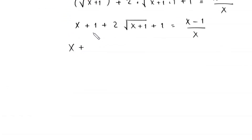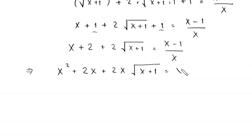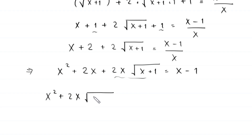Next, x plus 2 plus 2 times root (x+1) is equal to (x minus 1) over x. If we multiply both sides of this equation by x, this implies that x squared plus 2x plus 2x times root (x+1) is equal to x minus 1. Moving the terms x and negative 1 to the left hand side, this will become x squared plus 2x times root (x+1), then 2x minus x gives plus x, and plus 1 is equal to 0.